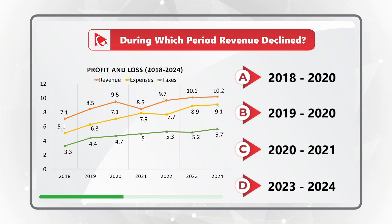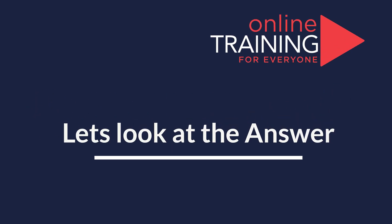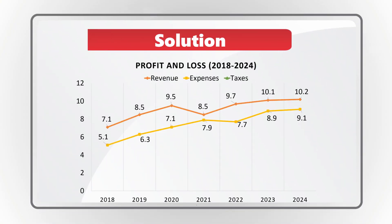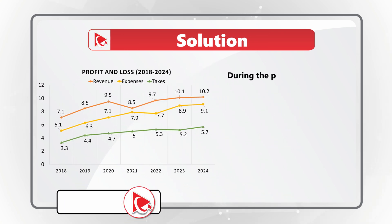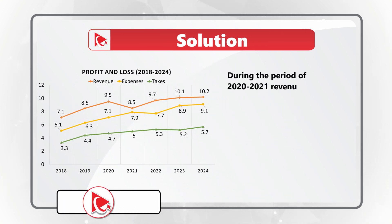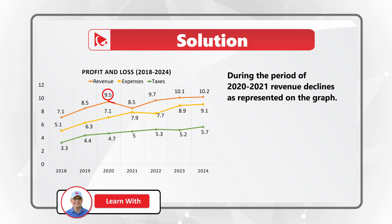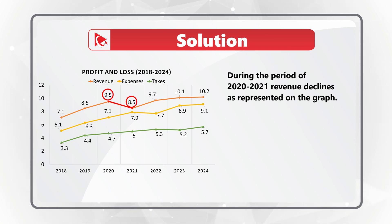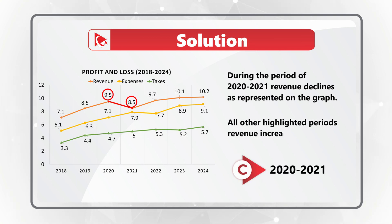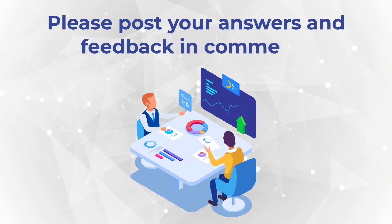Take a moment to pause and find the solution. The revenue goes down between 2020 and 2021, represented by the blue line. In 2020, revenue was about 9.5 units, and in 2021 it dropped to approximately 8.5 units. All other highlighted periods indicate revenue increases. The correct answer is choice C: the period between 2020 and 2021.